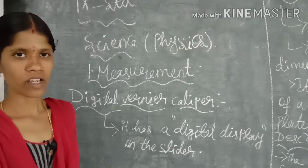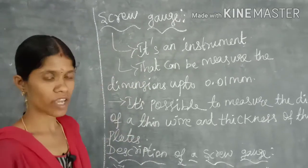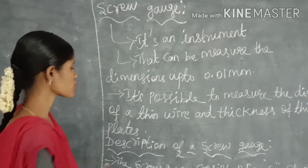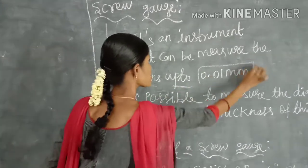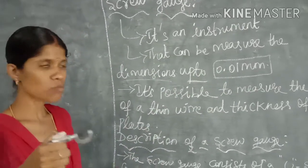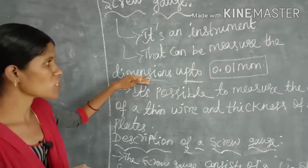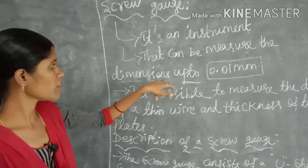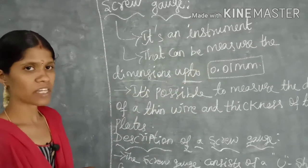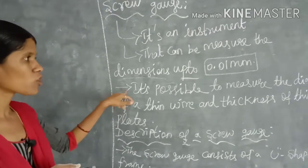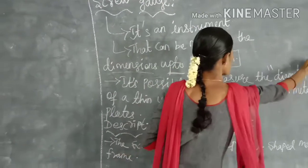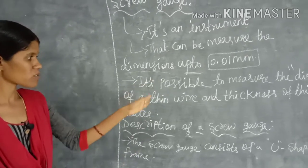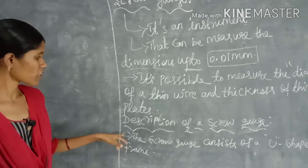Our next topic is the screw gauge. The screw gauge is an instrument that can measure dimensions up to 0.01 millimeter. Using the screw gauge, it is possible to measure the diameter of a thin wire and the thickness of thin metallic plates.